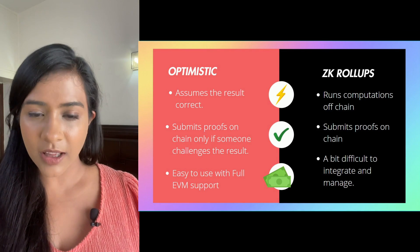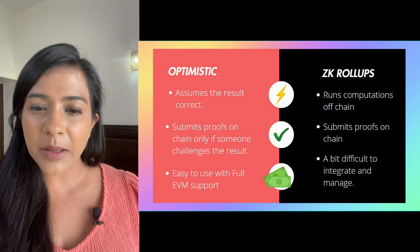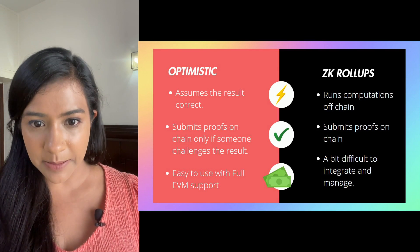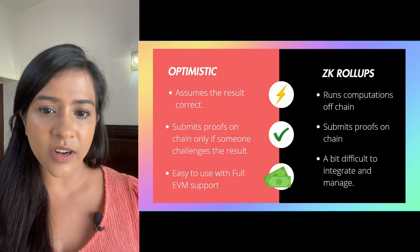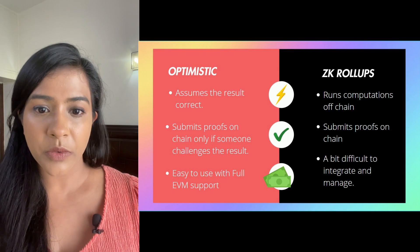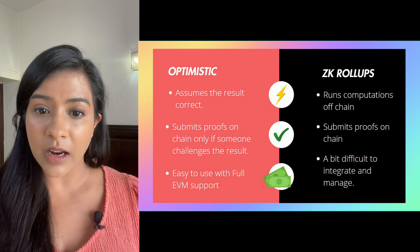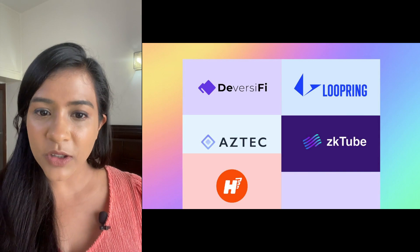These are the basic differences between ZK and optimistic rollups. ZK rollups in general are faster and cheaper than optimistic rollups, but they may not be suitable for all types of dApps as validity proofs are intense to compute. Also, withdrawing funds from layer 2 to layer 1 is much faster in ZK rollups.